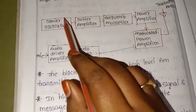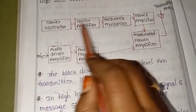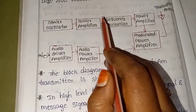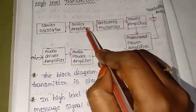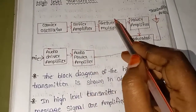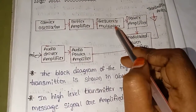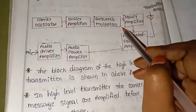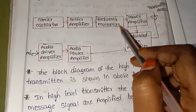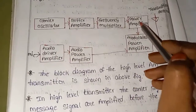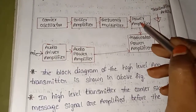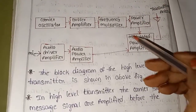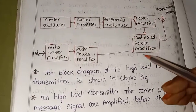The next section is the carrier oscillator. The buffer amplifier connects to the frequency multiplier. Then comes the power amplifier, which connects to the modulated power amplifier.